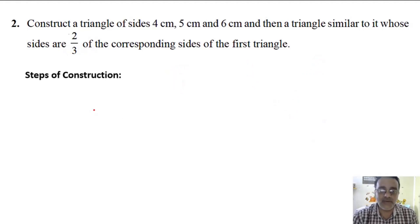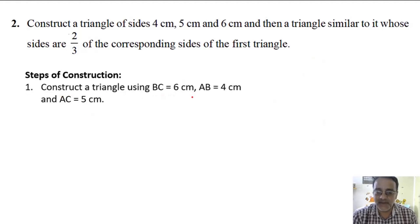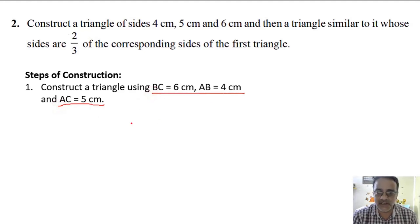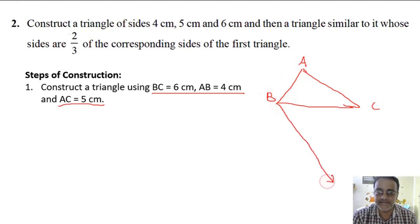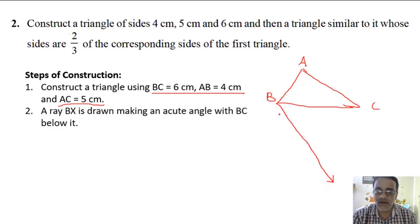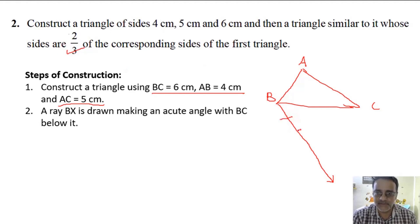So we make 3 equal parts. If it is 4 by 5, how many equal parts? 5. If 7 by 3? 7. Always look at the bigger number, whether in numerator or denominator. If 5 by 7? 7. If 5 by 3? 5. Good. We'll start: construct a triangle using BC equal to 6 cm, AB equal to 4 cm, and AC equal to 5 cm.